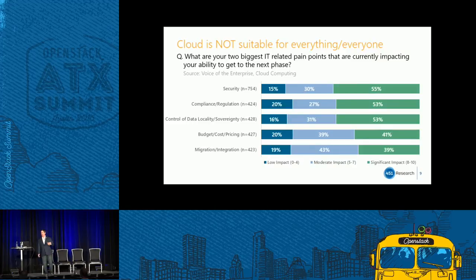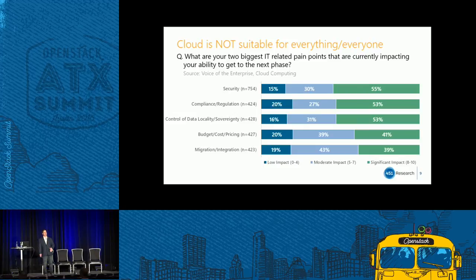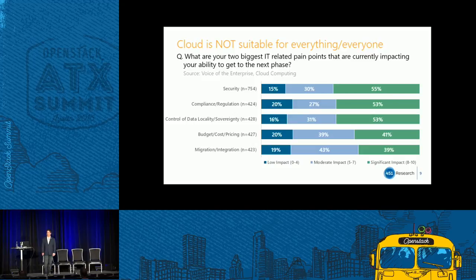When we talk about IT pain points, there should be no surprises here. Security, compliance, and data sovereignty are the top-of-mind issues for enterprises as far as why they're not able to get to the next phase. So if you're a vendor or service provider pitching to an enterprise and you are not mentioning security, compliance, and data sovereignty as part of your value proposition, then look to others.